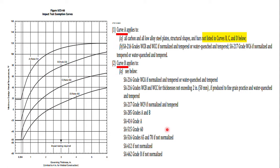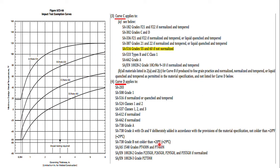This is the material for curve B such as SA 516 Grade 65 and 70 if not normalized. These are the materials for curve C and D.